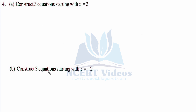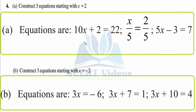Question 4, Part a: Construct three equations starting with x equals 2. First equation: multiply x with 10 and add 2 to get 22 — so 10x plus 2 equals 22. Check: 10 times 2 is 20, plus 2 is 22. Second equation: x divided by 5 gives 2 over 5 — so x over 5 equals 2 over 5. Check: 2 over 5 equals 2 over 5. Third equation: 5x minus 3 equals 7. Check: 5 times 2 is 10, minus 3 is 7. All correct.